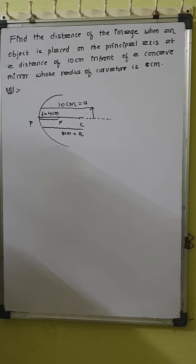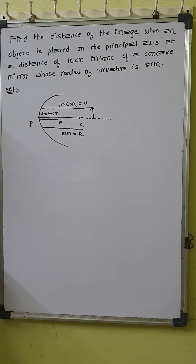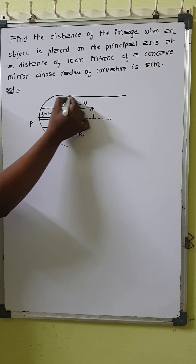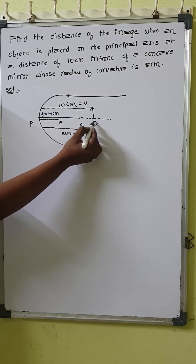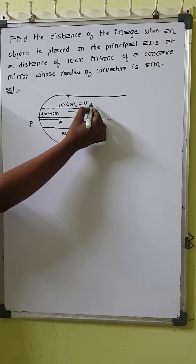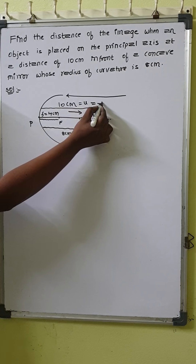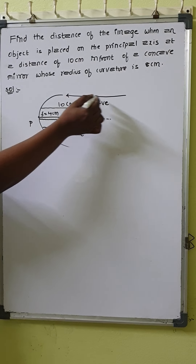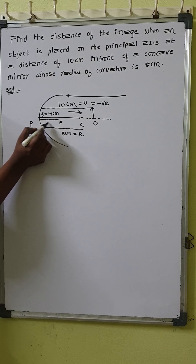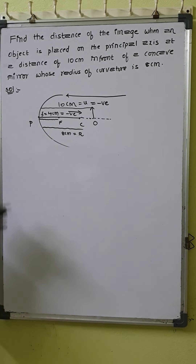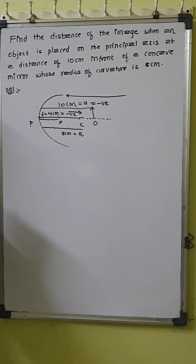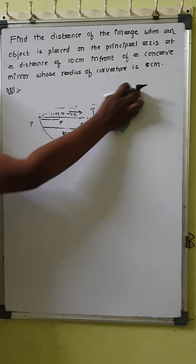Before writing the given values, let me explain the sign convention. Light rays are traveling in this direction. We measure object distance from pole to object in the opposite direction, so object distance is negative. Focal length is measured from pole to focus, also in the opposite direction, so focal length is negative. Radius of curvature is also negative.